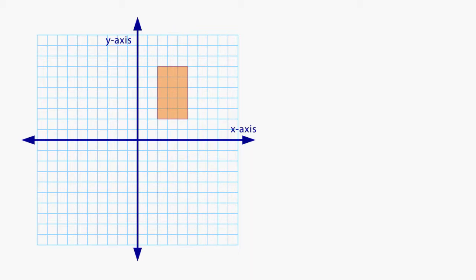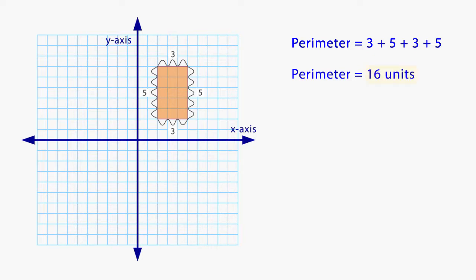Here we have a rectangle in the coordinate plane. Let's count the distance around the rectangle to find the perimeter. Begin at any vertex and start counting. The top side is 3 units. The right side is 5 units. The bottom side is 3 units. And the left side is 5 units. Add these numbers together. The perimeter of the rectangle is 16 units.